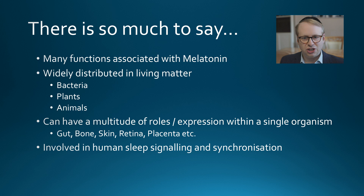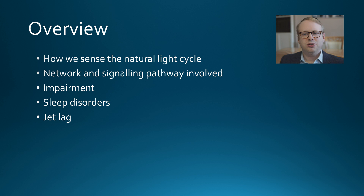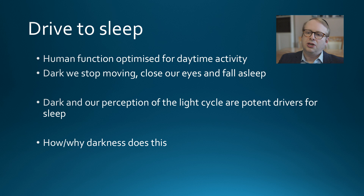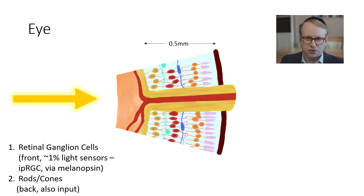By overview: how do we sense the natural light cycle? What are the network and signaling pathways involved? What happens in impairment, sleep disorders, and jet lag? Human function is optimized for daytime activity, and when it gets dark we stop moving, we close our eyes, and we fall asleep. Dark — and our perception of the light cycle — are very important drivers for sleep to occur. So how and why does darkness do this?